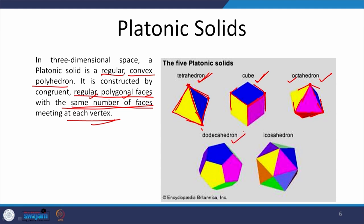A dodecahedron has pentagons meeting together — at each vertex, 3 pentagons come together. It is always a convex solid with the same number of faces meeting at each vertex. An icosahedron has 5 equilateral triangular surfaces meeting at each vertex and a total of 20 faces. Only these 5 solids qualify as platonic solids, with the condition that at each vertex the same number of regular faces meet together.